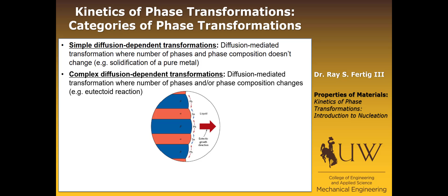Then we have a more complex diffusion-dependent transformation, but it's still diffusion-mediated. In this case, the number of phases and/or the phase compositions are going to change. An example of this would be a eutectoid reaction. What's shown here is actually a eutectic reaction, but you can see the eutectic growth direction as the solid phase grows into the liquid phase, with diffusion required from the liquid into one phase or away from another phase.